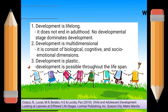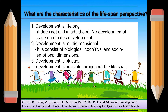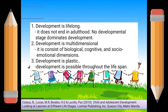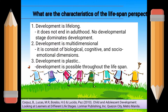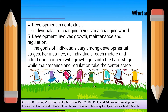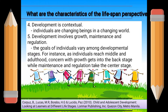So what are the characteristics of the life span perspective? First, development is lifelong — it does not end in adulthood and no developmental stage dominates development. Development is multidimensional, consisting of biological, cognitive, and socio-emotional dimensions. Development is plastic — development is possible throughout the lifespan. Development is contextual — individuals are changing beings in a changing world. Development involves growth, maintenance, and regulation. The goals of individuals vary among developmental stages; as individuals reach middle adulthood, concern with growth takes a back stage while maintenance and regulation take center stage.